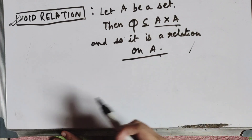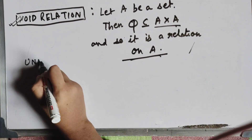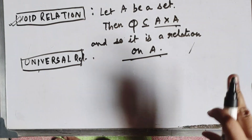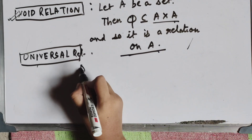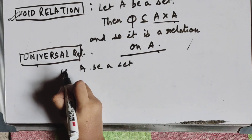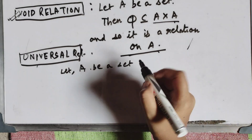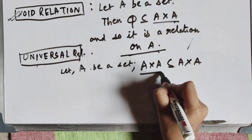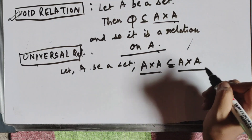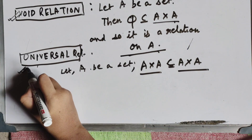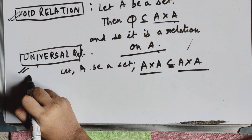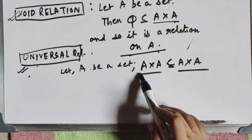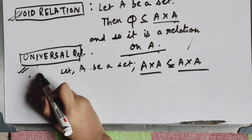The second type is universal relation. Let A be a set. Then A cross A is also a subset of A cross A. This type of relation is called a universal relation. The difference: void relation uses the null set phi ⊆ A×A, while universal relation uses A×A ⊆ A×A.